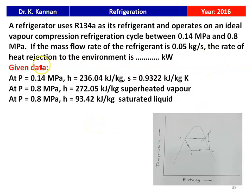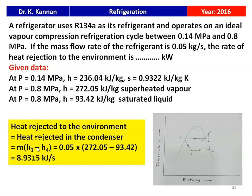We need to calculate the rate of heat rejection to the environment. Heat rejection occurs in the condenser, process 3 to 4. Heat rejected equals mass flow rate multiplied by (H3 minus H4), which is 0.05 multiplied by (272.05 minus 93.42), equal to 8.9315 kilo joules per second. The rate of heat rejection to the environment is 8.9315 kJ/s.